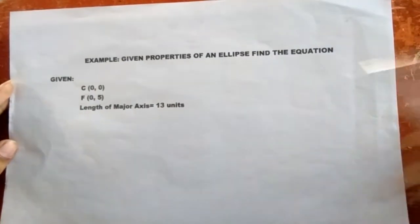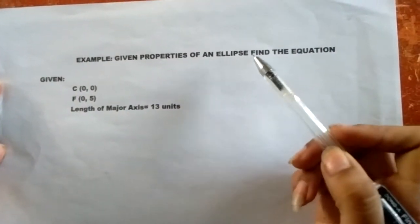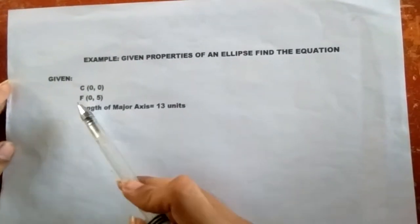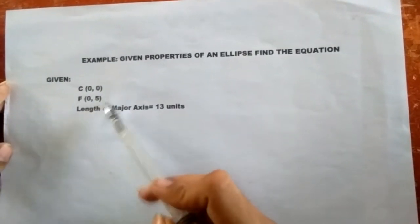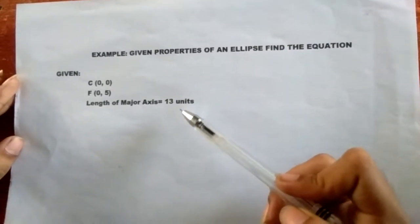Consider this example: given properties of an ellipse, find the equation. We are given the center, which is located at the origin, the focus (0, 5), and the length of the major axis, which is 13 units.